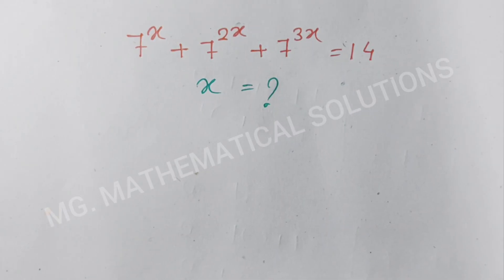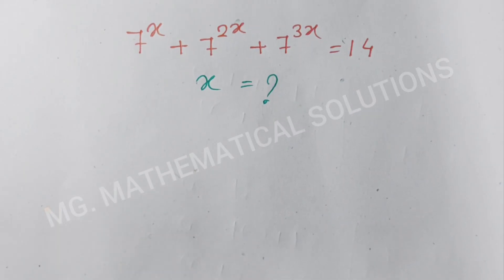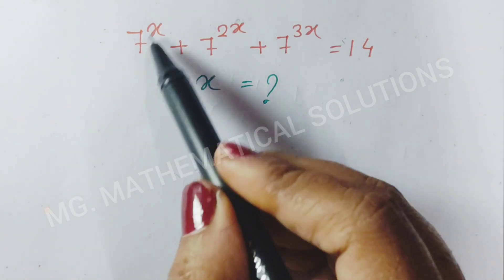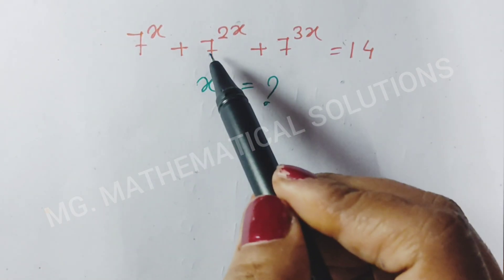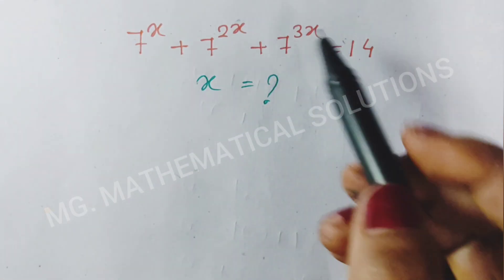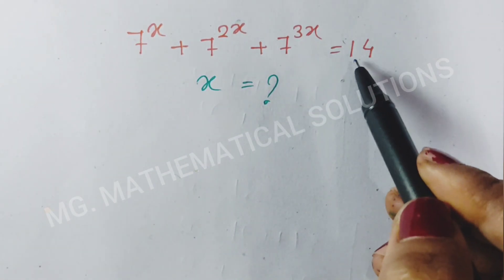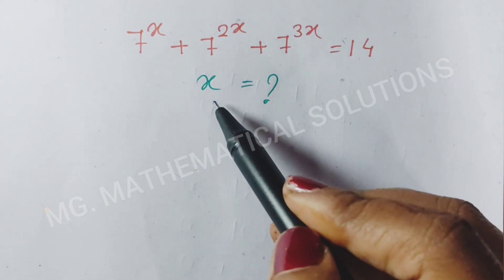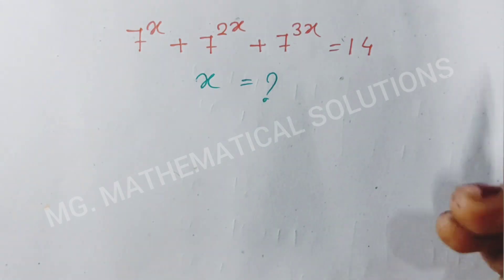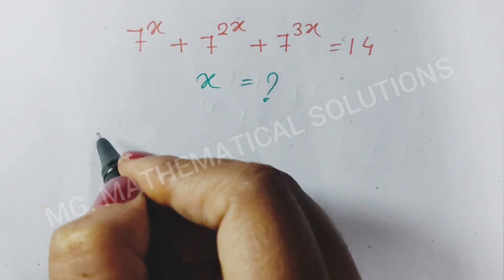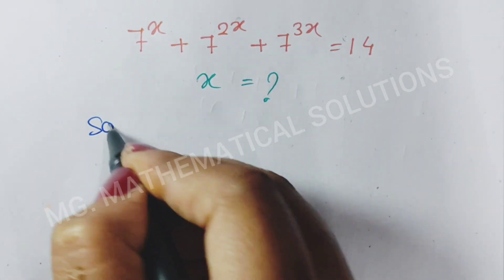Hello students. Today I solve an algebra problem which is 7 to the power x plus 7 to the power 2x plus 7 to the power 3x equal to 14. Then x equal to what? Let's see the solution.